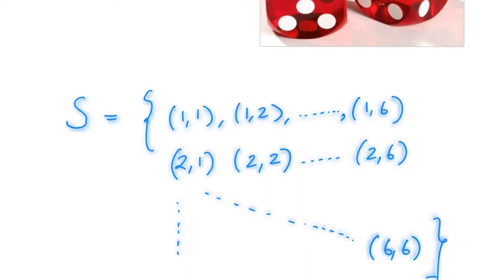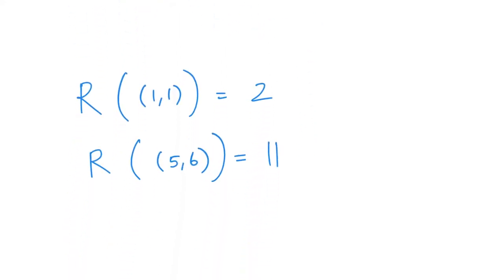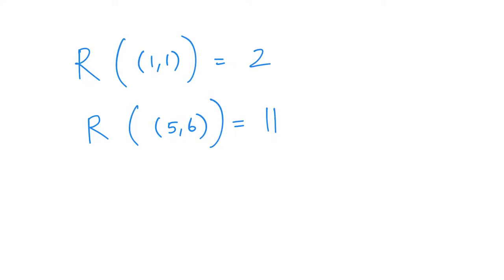I can define a function from this sample space to the set of real numbers. Corresponding to the outcome (1,1) — which means I toss die 1 and get 1, and die 2 and also get 1 — my random variable will assume a value of 2. And corresponding to the outcome (5,6), my random variable will assume a value of 11. So random variables are basically functions defined from the sample space.